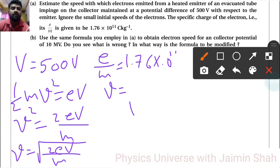V is equal to by putting all the values 2 into 1.6 into 10 raised to minus 19 into V 500. But here we have given E by m.